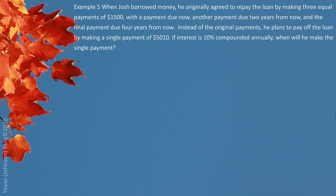Example 5. When Josh borrowed money, he originally agreed to repay the loan by making three equal payments of $1,500. With a payment due now, another payment due two years from now, and another final payment due four years from now. Instead of the original payment, he planned to pay off the loan by making single payment $5,010. If interest is 10% compounded annually, when will be the right time to make this single payment? Very similar structure like last example. $5,010 happened in the future sometime. And it should be equivalent to the present value right now.